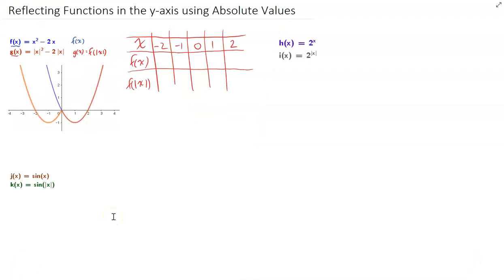All right, so here we have a table of values here. Now, if I focus on this part for a second, and I sub in zero into f of x, I'll get zero squared minus 2 times zero, that's zero. If I sub 1 in, I'll get 1 squared minus 2 times 1. So 1 minus 2, I'll get negative 1 there.